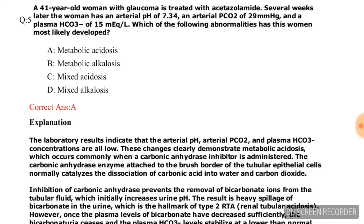Question number five: A 41-year-old woman with glaucoma is treated with acetazolamide. Several weeks later she has an arterial pH of 7.34, arterial PCO2 of 29 mmHg, and plasma bicarbonate of 50 mEq/L. Which of the following abnormalities has this woman most likely developed? Options are metabolic acidosis, metabolic alkalosis, mixed acidosis, mixed alkalosis. The correct answer is option A, metabolic acidosis.